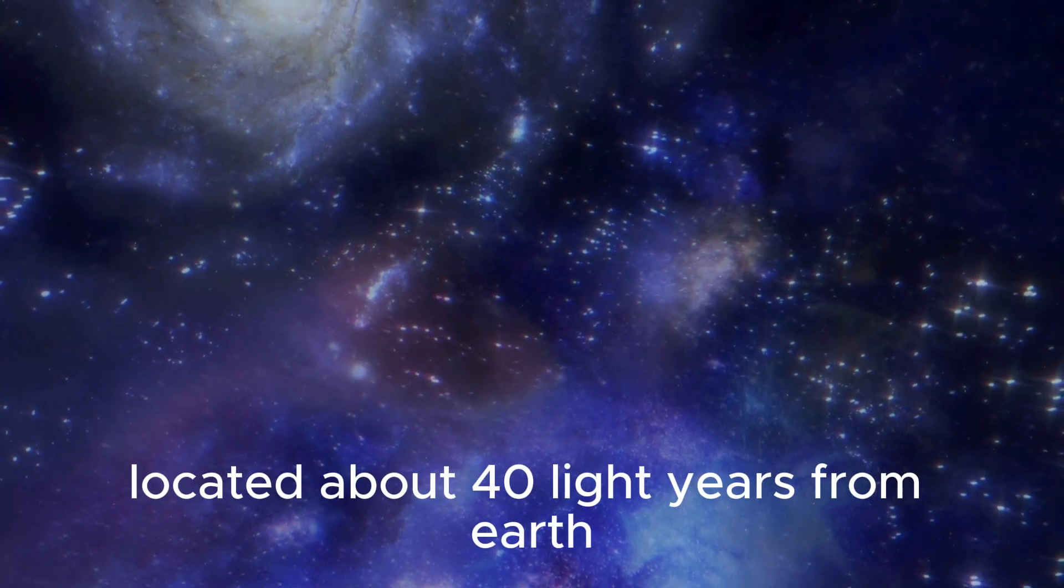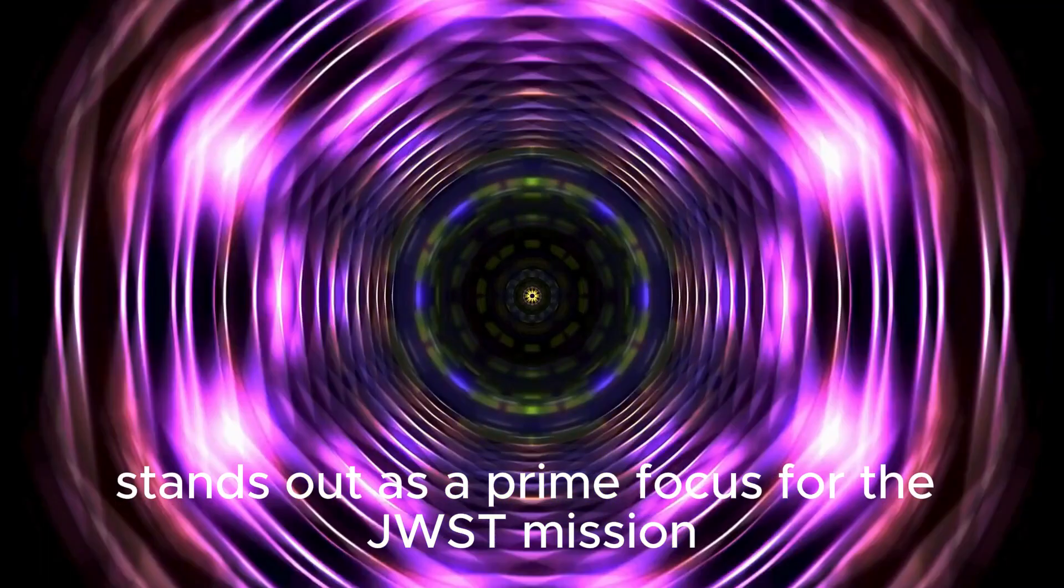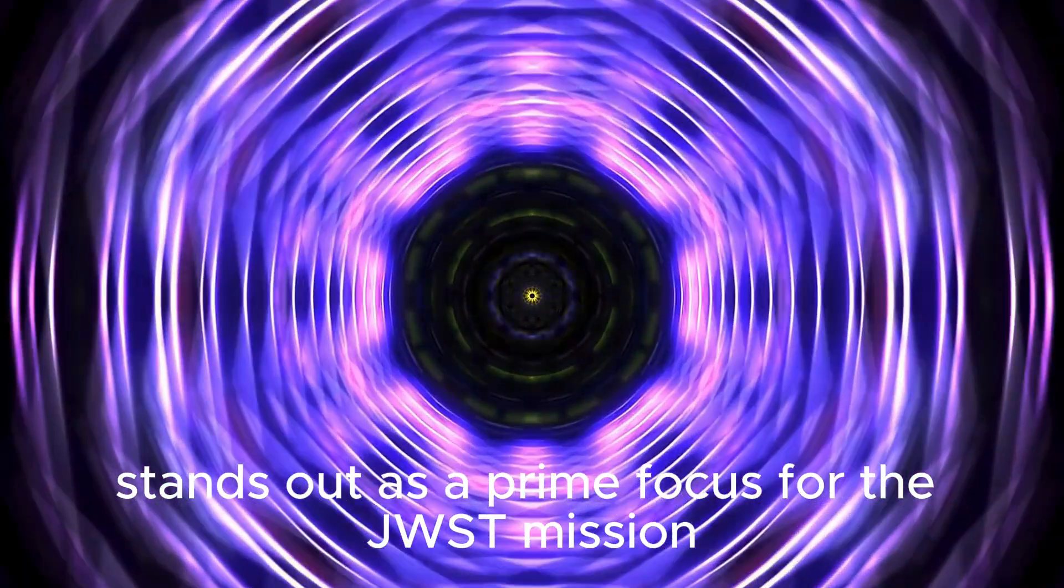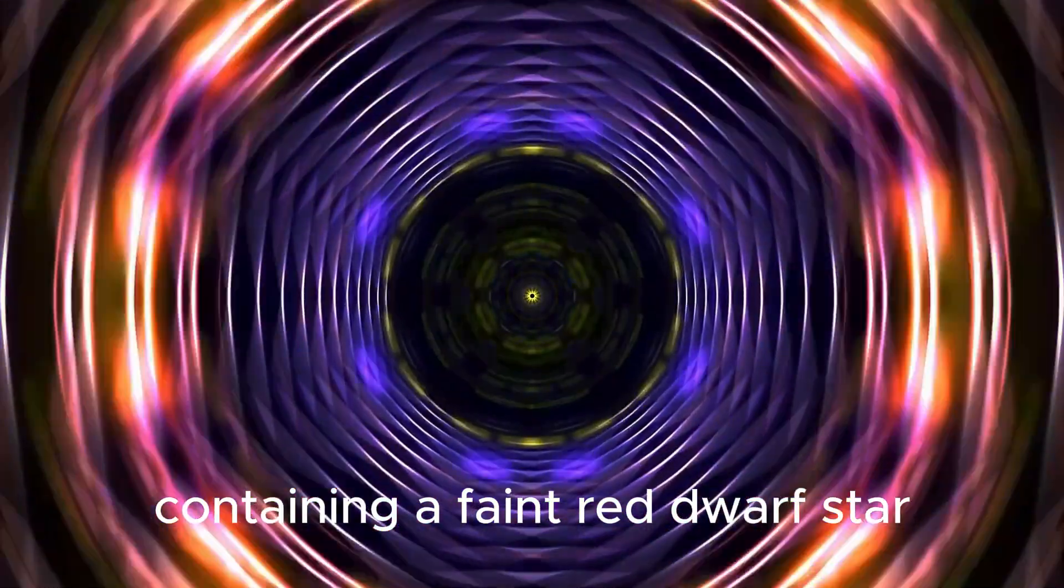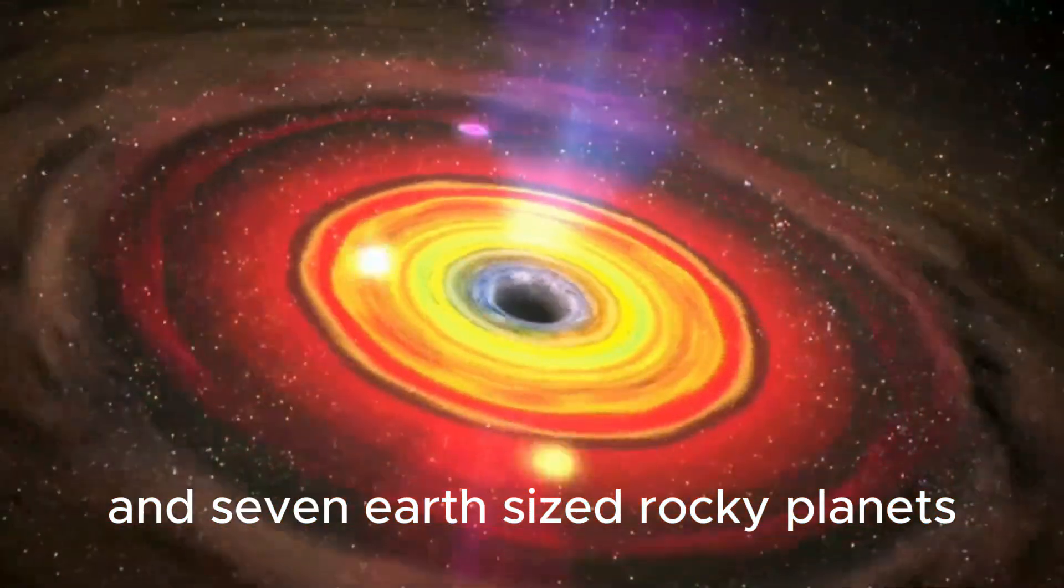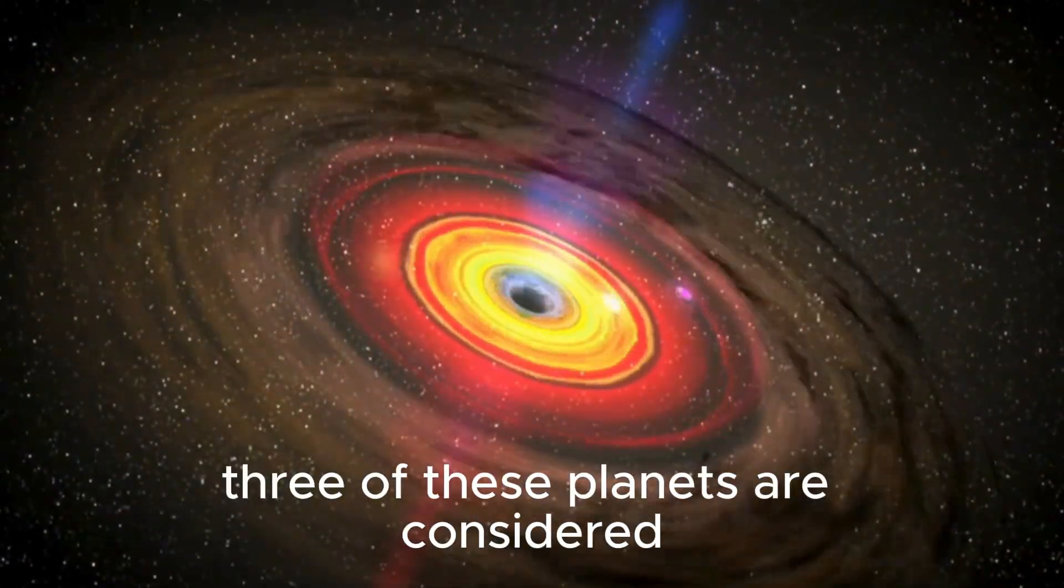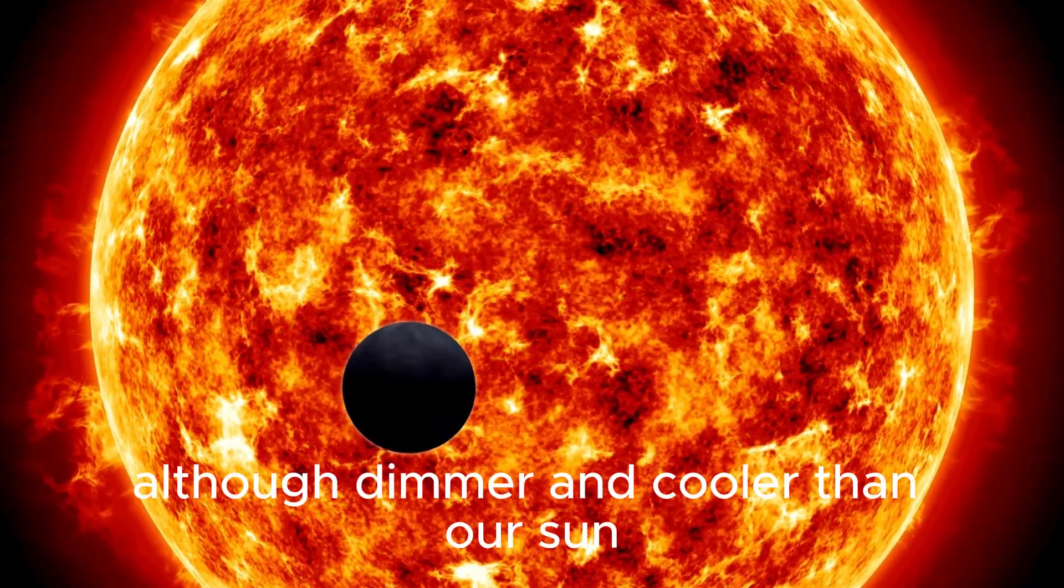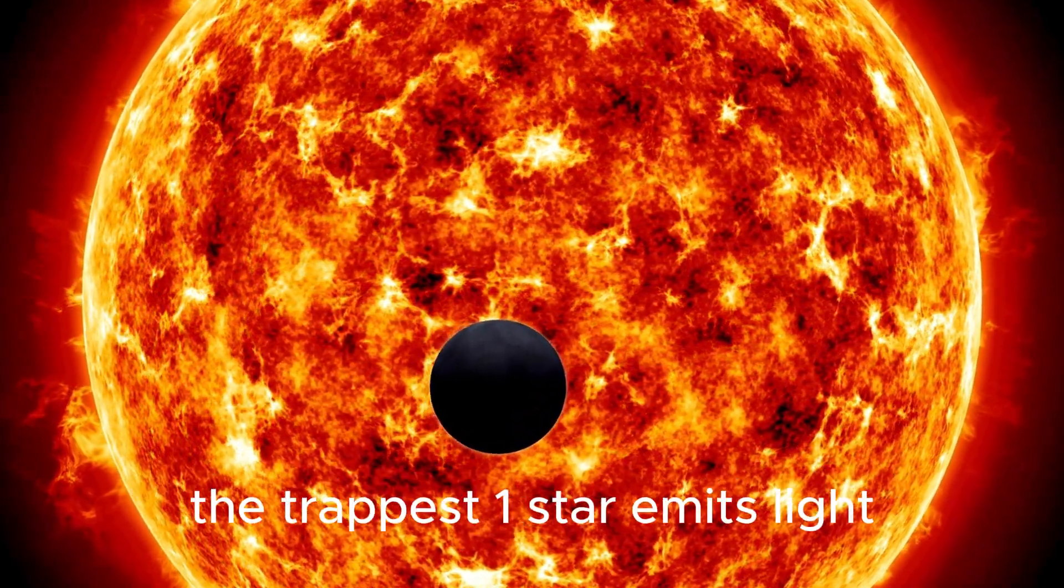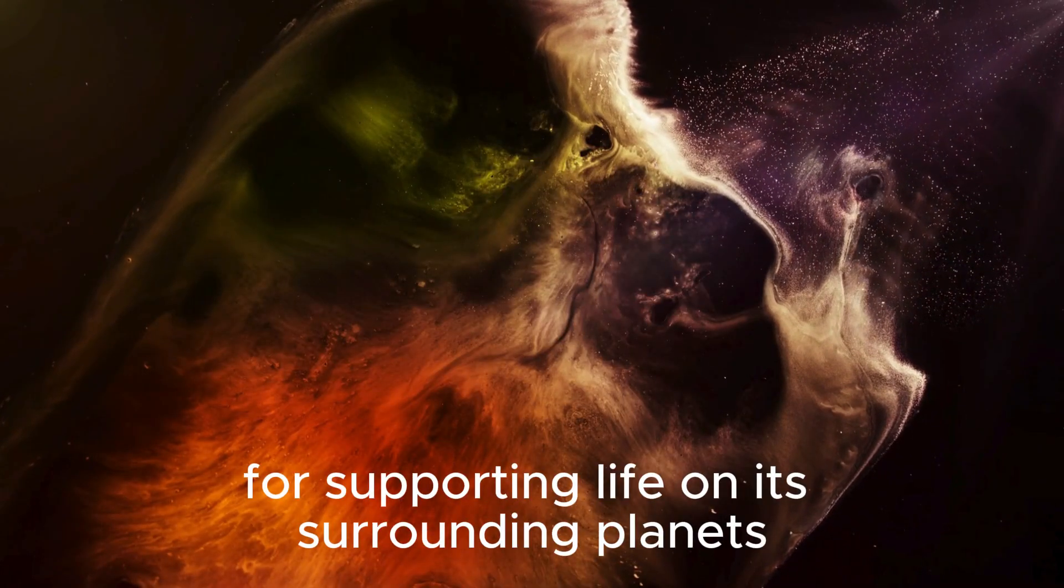Located about 40 light-years from Earth, the TRAPPIST-1 planetary system stands out as a prime focus for the JWST mission. This intriguing system, containing a faint red dwarf star and seven Earth-sized rocky planets, orbits the calm red dwarf star. Three of these planets are considered potentially habitable and may have water on their surfaces. Although dimmer and cooler than our sun, the TRAPPIST-1 star emits light suitable for supporting life.